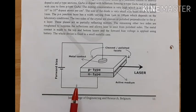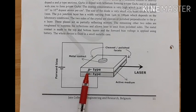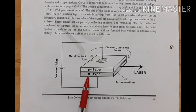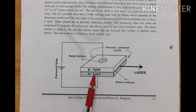In the construction of the semiconductor laser, we have p-type and n-type semiconductors. P-type semiconductor is one in which majority charge carriers are holes; n-type semiconductor is one in which majority charge carriers are electrons. When we combine them, we get a p-n junction, which forms the diode.